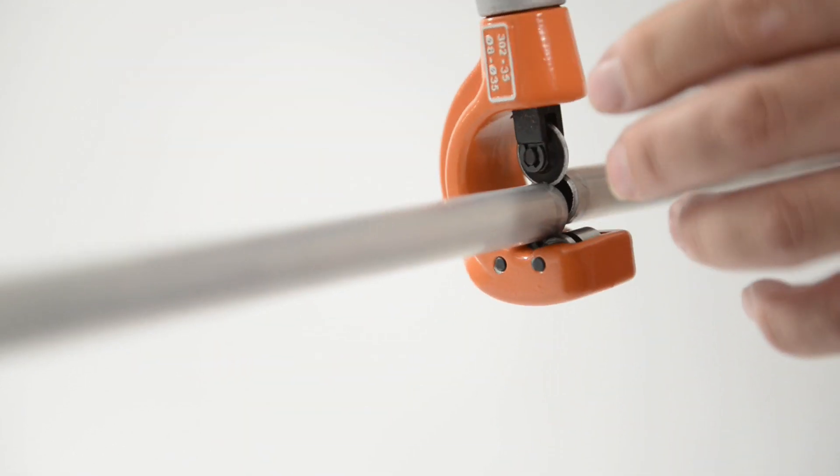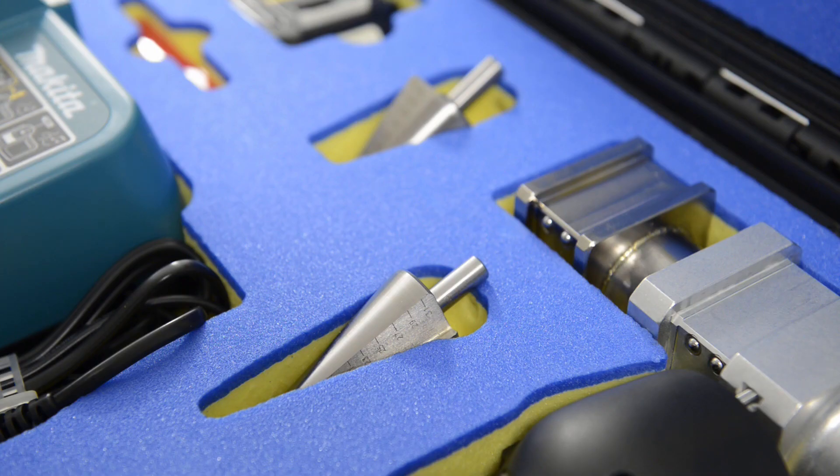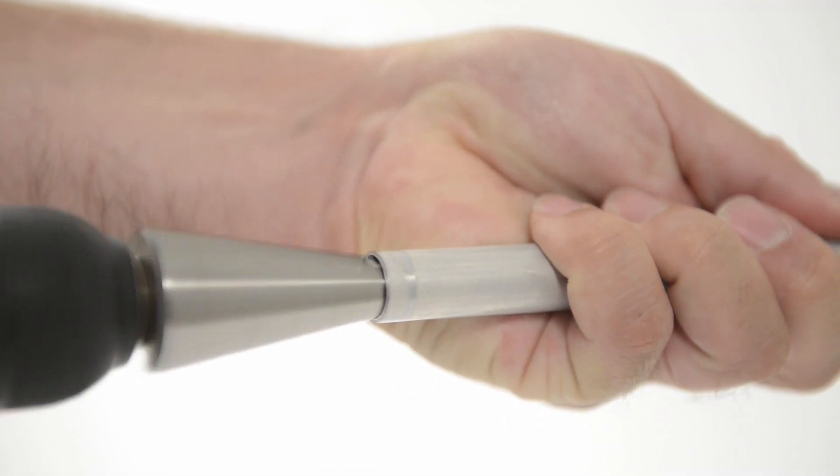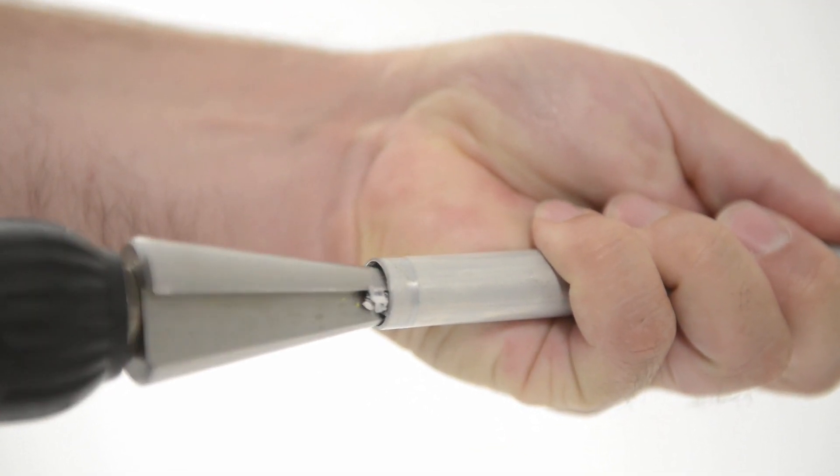Select the appropriate deburring tool from the toolkit, attach to a drill, and deburr the pipe, making sure you remove any swarf that may have entered the pipe.